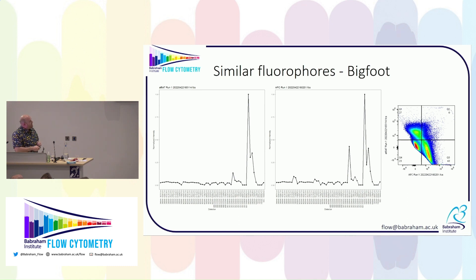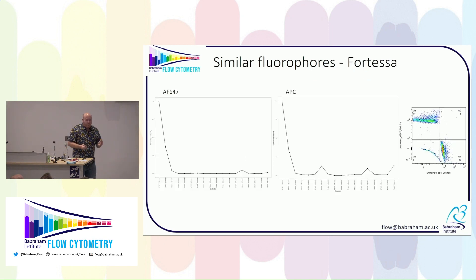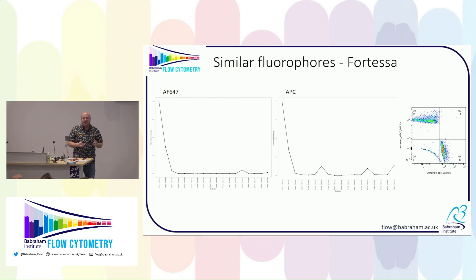This is Bigfoot data. The Aurora beats the Bigfoot in that it has an extra detector — a 670, 690, and ~700 nm detector — which means it can separate APC and AF647 because they have a 10 nanometre shift in emission. The question is: if we apply the same unmixing to a Fortessa, can we separate APC and AF647?